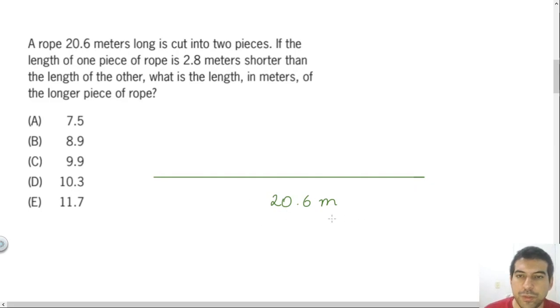I will cut this rope in two pieces, and one is 2.8 meters shorter than the other one. I will call one x because I don't know the measurement. And the other one that is 2.8 meters shorter will be x minus 2.8. And if we combine the two pieces, it will be the whole rope.